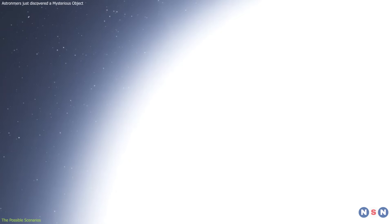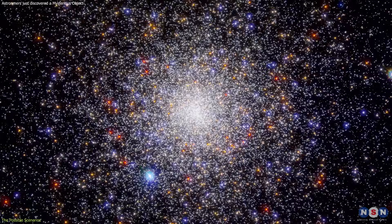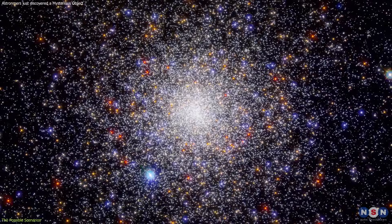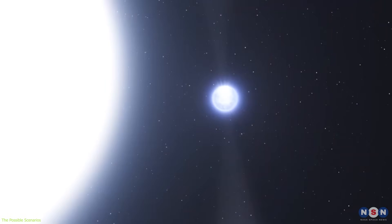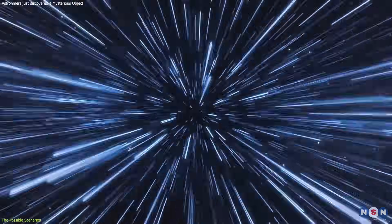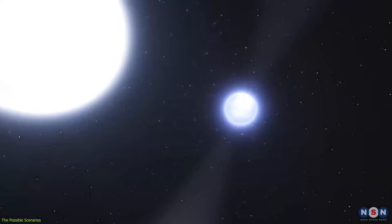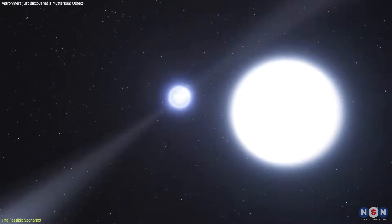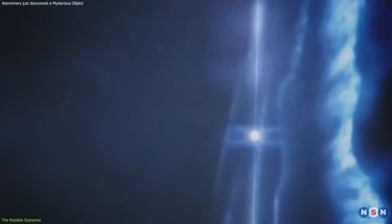The companion object of the pulsar is very faint and obscured by the dust and gas in the globular cluster. It is also very far away, about 40,000 light years from Earth. This makes it difficult to detect its light or radiation, and we have to rely on the radio signals from the pulsar to measure its mass.